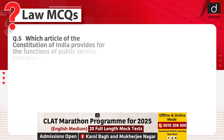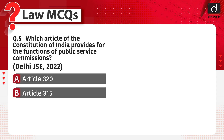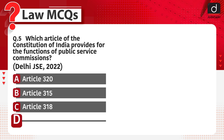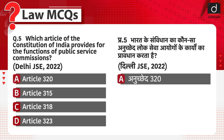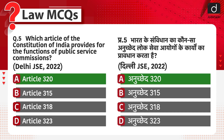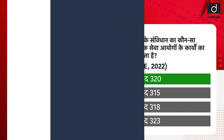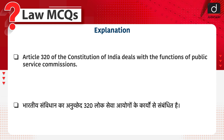Last question: which article of the Constitution of India provides for the functions of Public Service Commissions? Article 320, Article 315, Article 318, or Article 323? The correct answer is Article 320. Bhartiya Samvidhan ka Anuchhed 320 lok sewa aayog ki kaaryaon se sambandid hai.